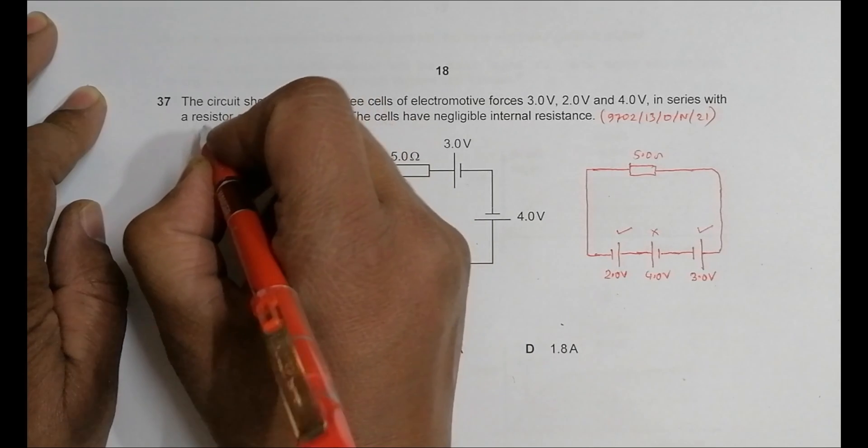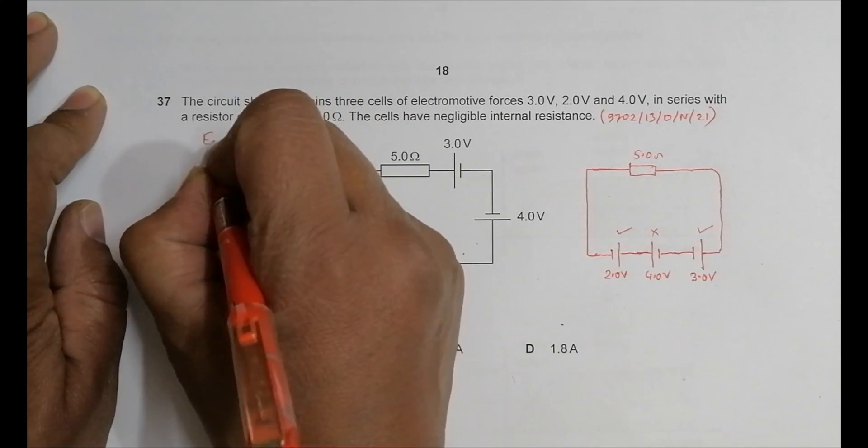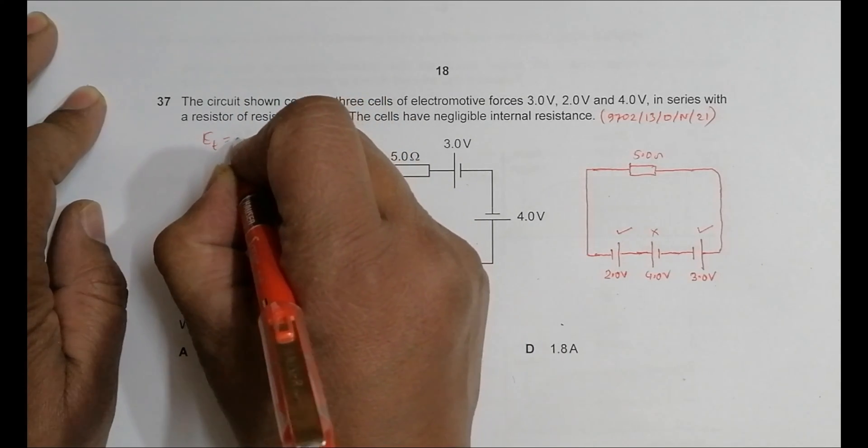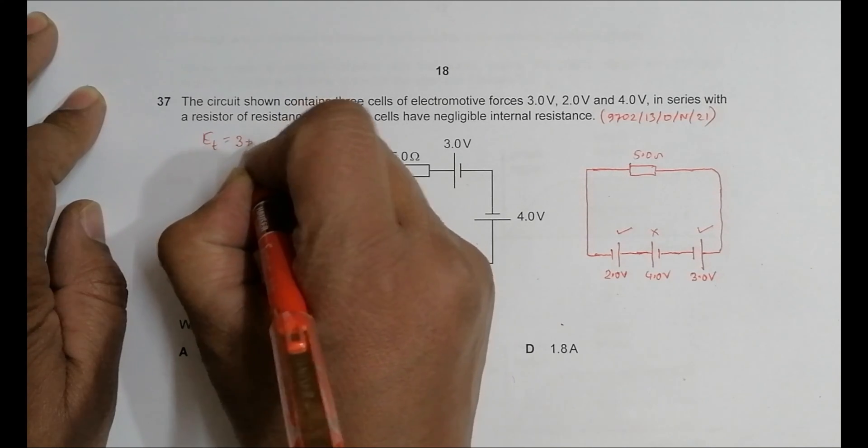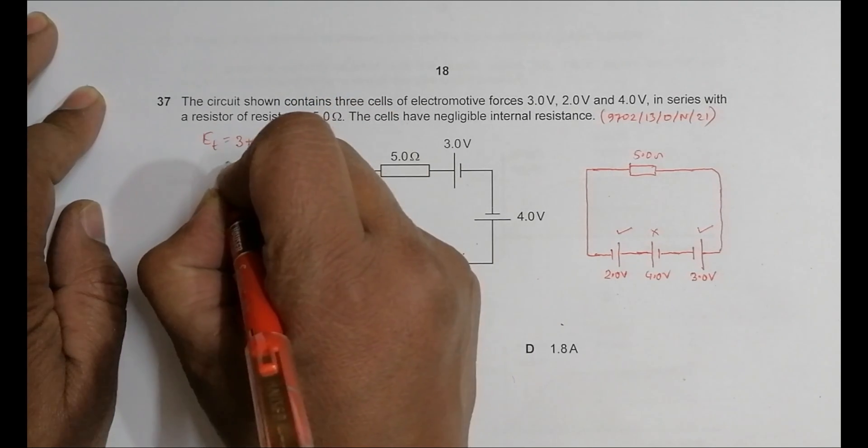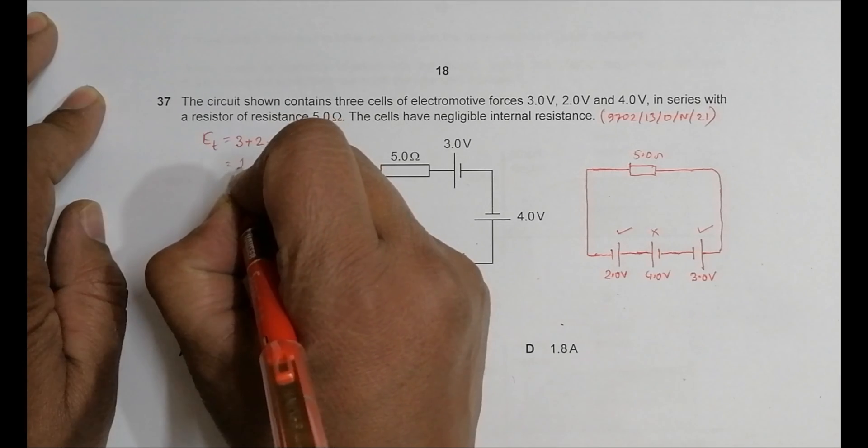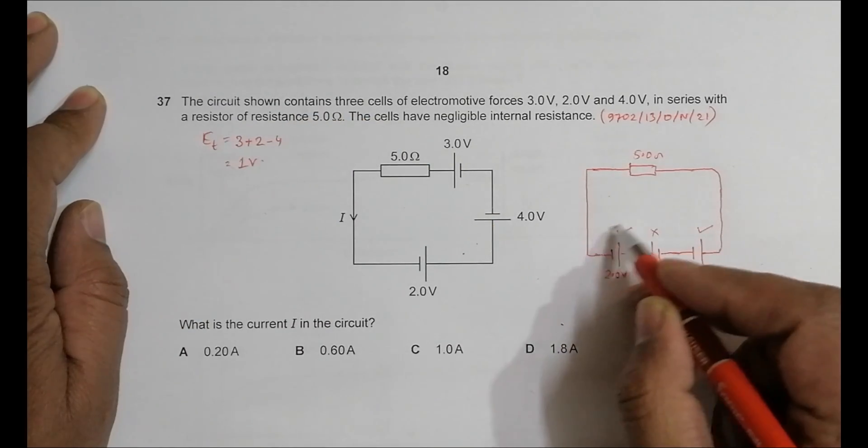So the total EMF will be equal to E_total equals 3 plus 2 minus 4, which equals 5 minus 4, which is 1 volt. So the total EMF from here will be equal to 1 volt.